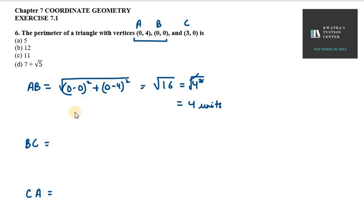So, for BC, we will apply distance formula. It will be 3 minus 0, so the first will be 3 minus 0.